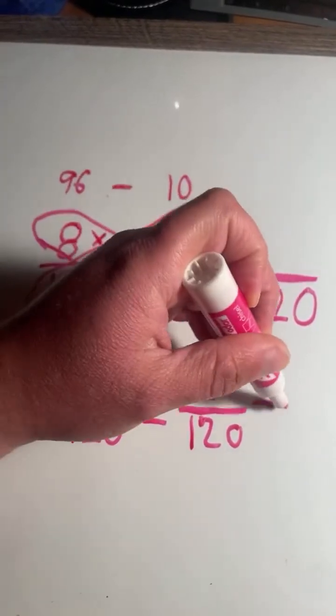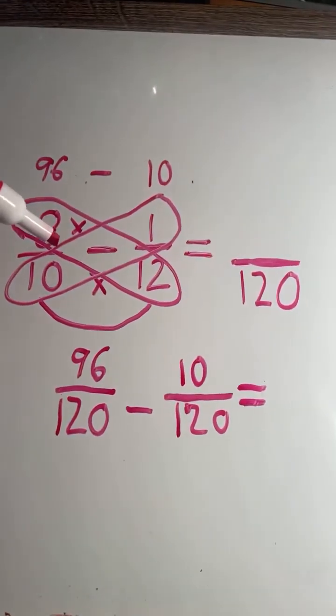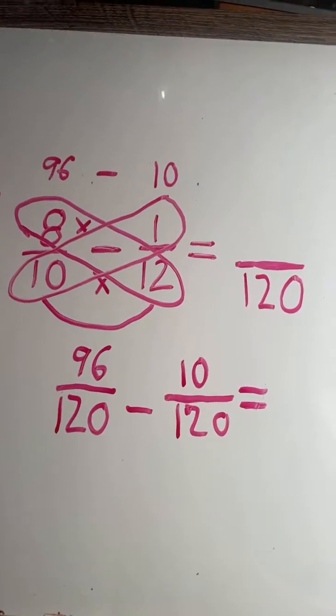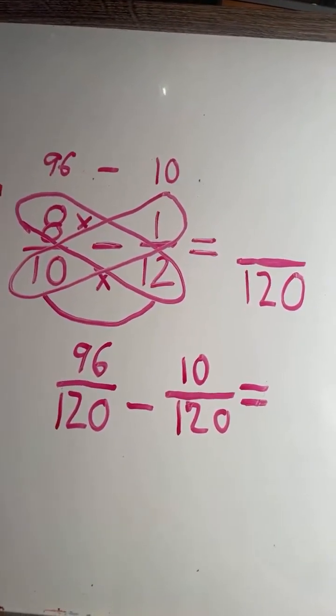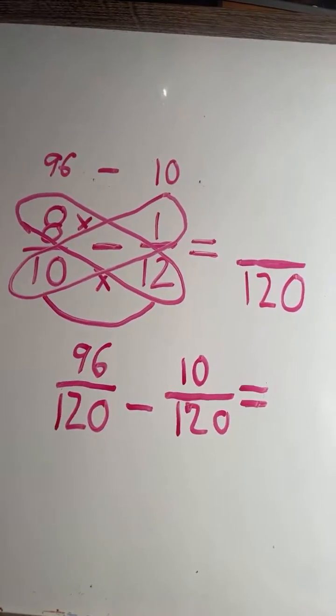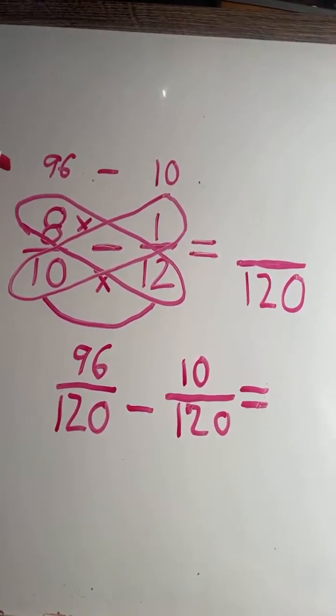So now that we have a common denominator, we can solve for the fraction. So 8 tenths translates to 96 120ths.